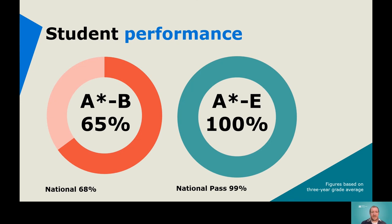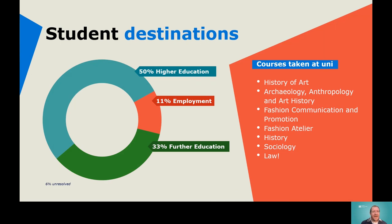In terms of student performance, A* to B average is almost 65% with a 100% pass rate, and the slide also shows destinations data from students who've gone on from the art history course. I'm keen to push you to be as successful as you can be. Thank you for listening — if you have any questions, please do get in touch. I hope that's explained more about what an A-Level in History of Art is and what it can do for you in the future.